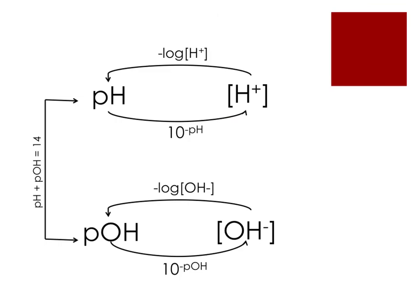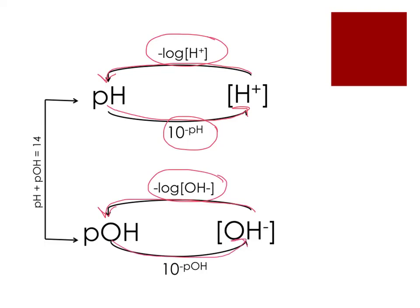In summary: to get from [H+] to pH, take the negative log of [H+]. To get from pH to [H+], do 10^(-pH). Likewise, pOH = -log[OH-], and [OH-] = 10^(-pOH). You can always convert between pH and pOH by subtracting from 14.